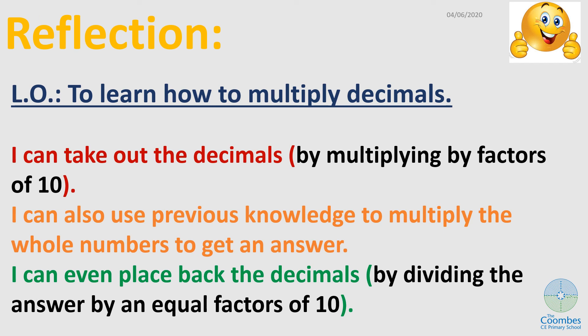Just as a reflection, were you able to take out the decimal points? Were you also able to use previous knowledge to multiply whole numbers to get an answer? Were you even able to place back the decimal points in your answer? If you were able to do all that, well then, you can now multiply decimals.